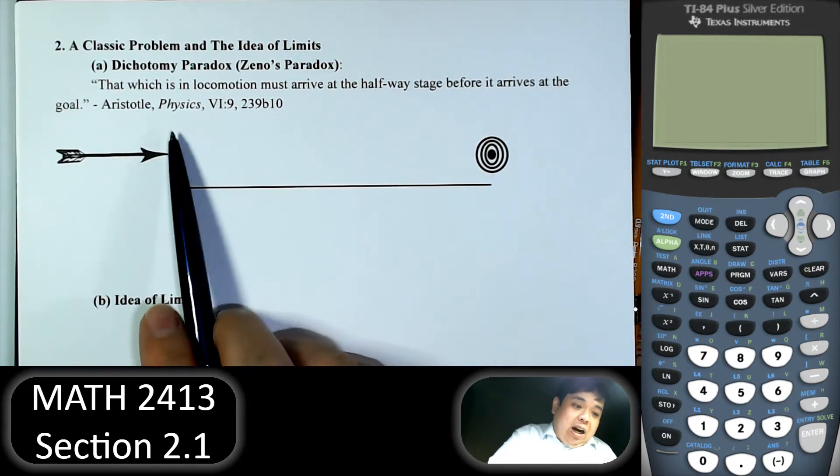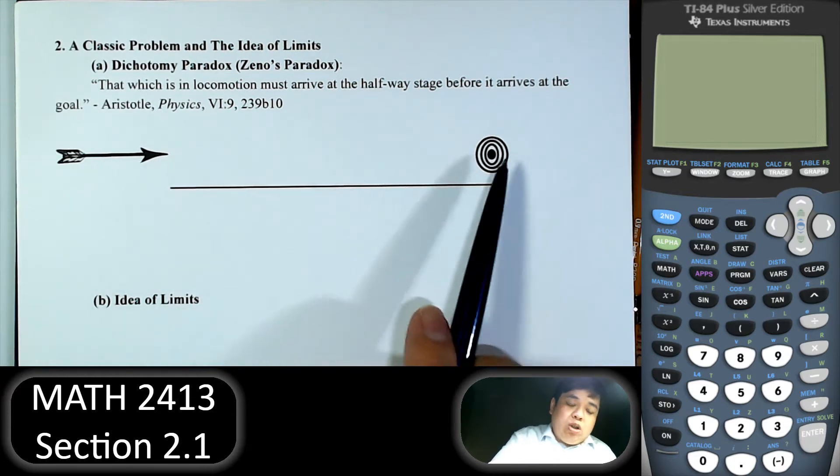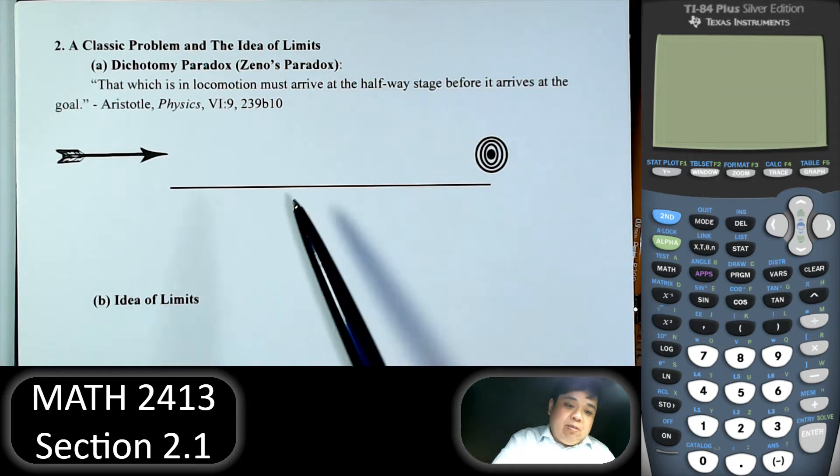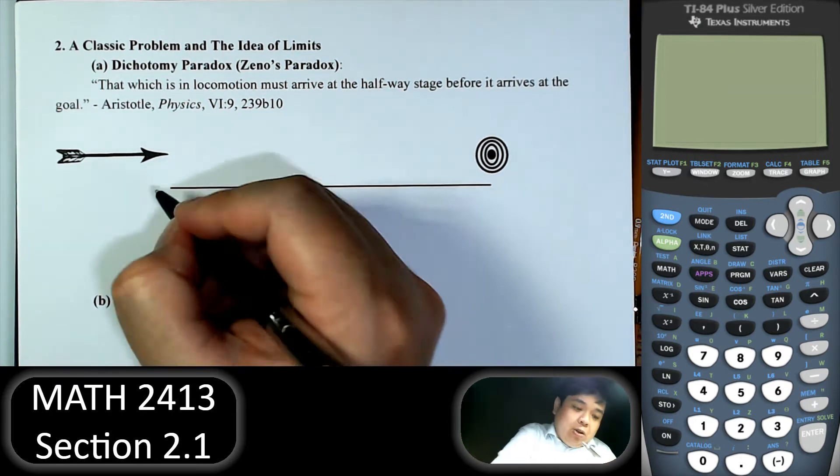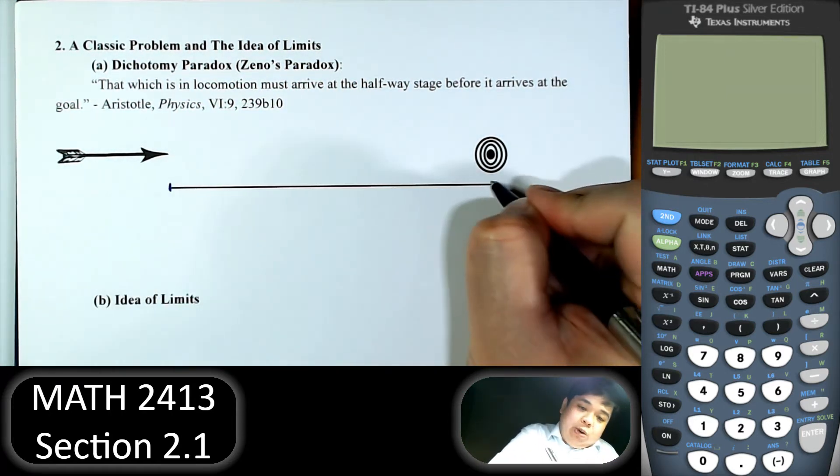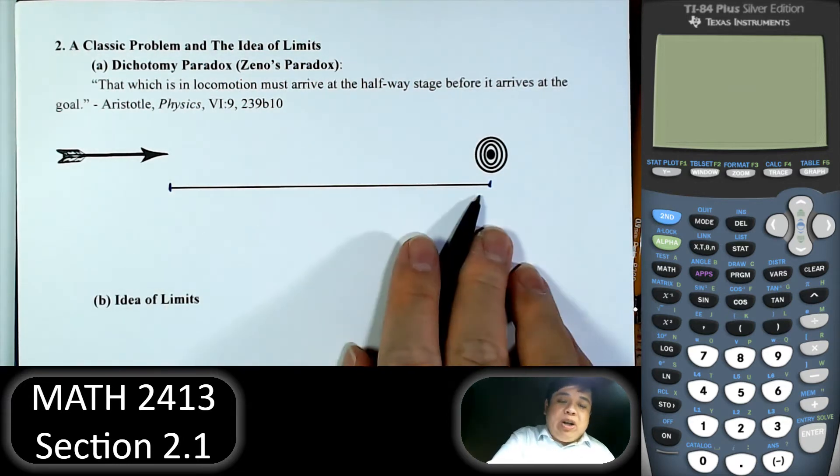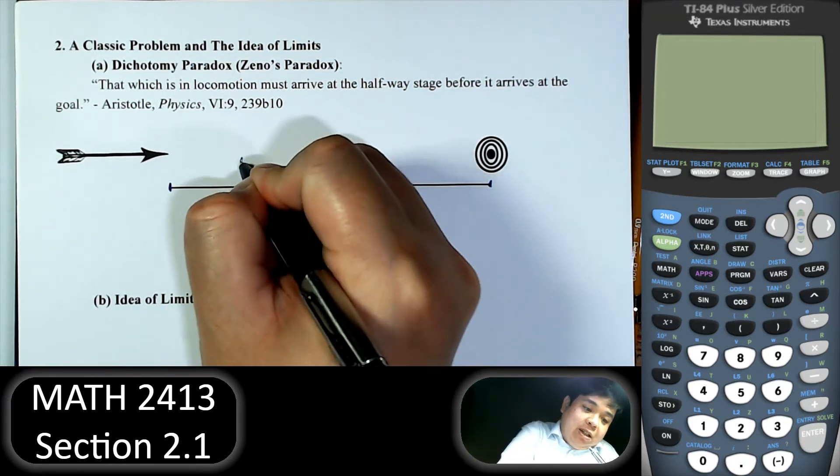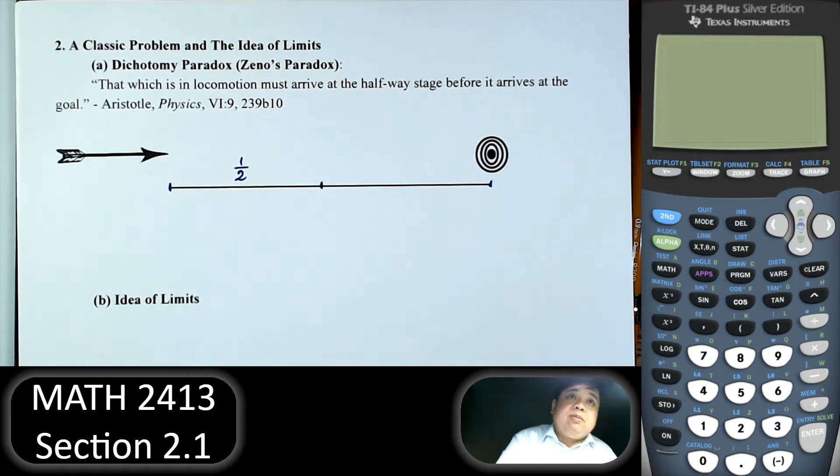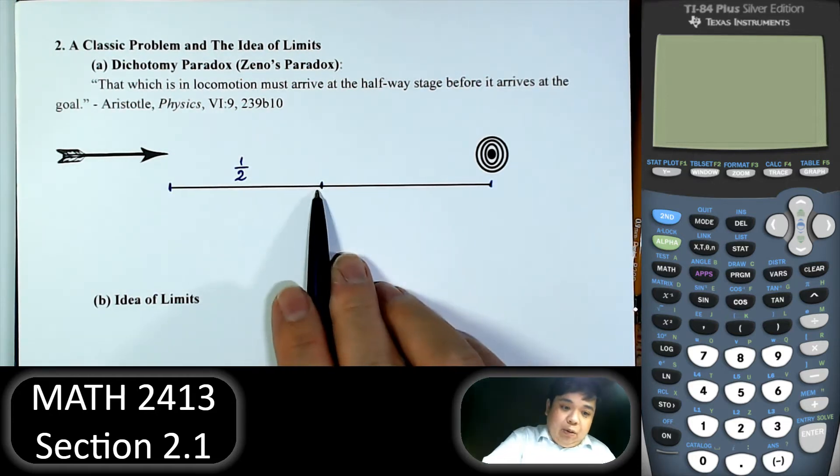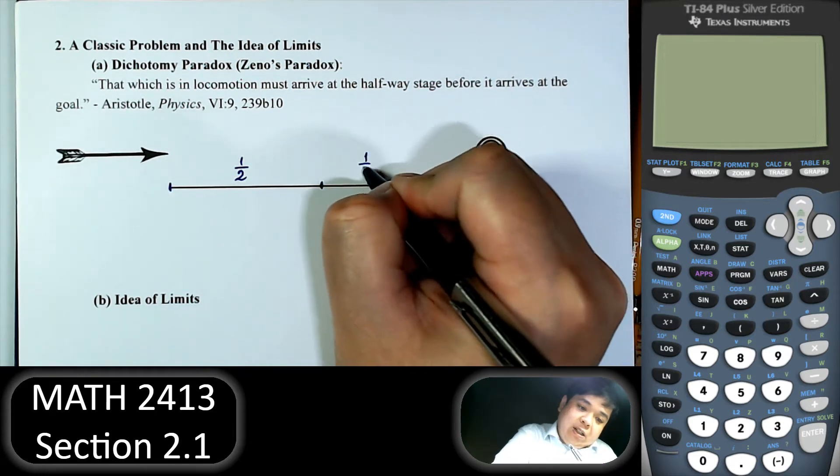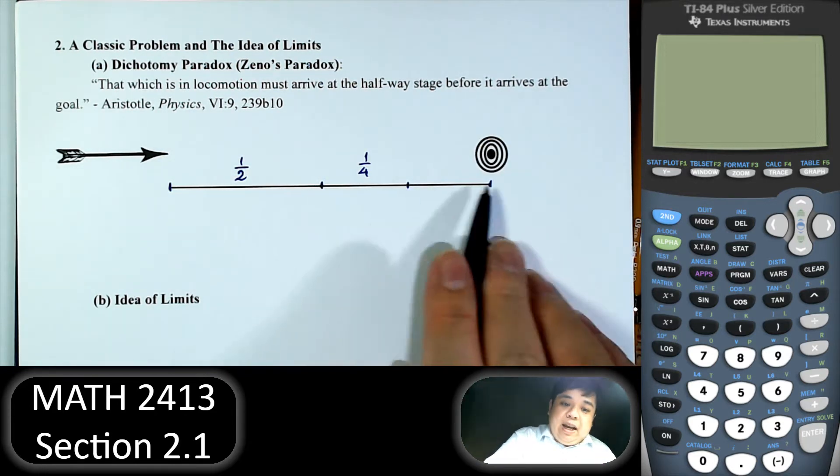So it says that an object, when it goes from one point to another, before it reaches the final point, it will have to hit halfway. So let's say the arrow will travel the whole distance here. Before it reaches the whole distance, it will have to have half of it, half of the distance. And then from that point on, it will have half of the remaining distance, and then half of that.